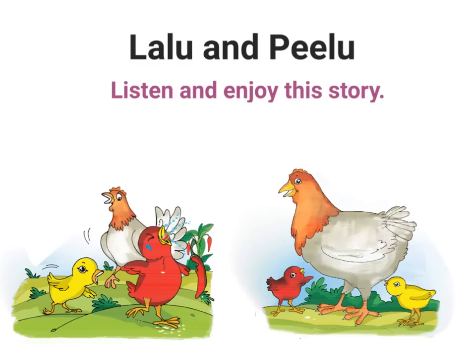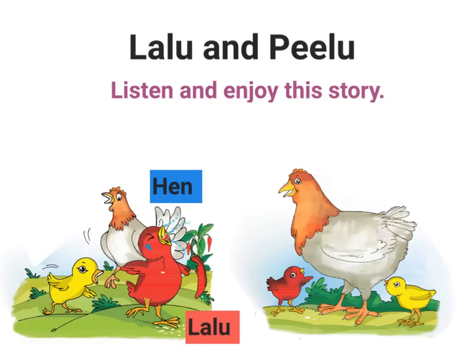Now that we have learnt all these new words, let's read the story Lalu and Pilu. This story has three characters in it. A character is anyone who thinks, talks and comes again and again in the story. The three characters in this story are the hen, Lalu and Pilu. Now let's start reading the story.